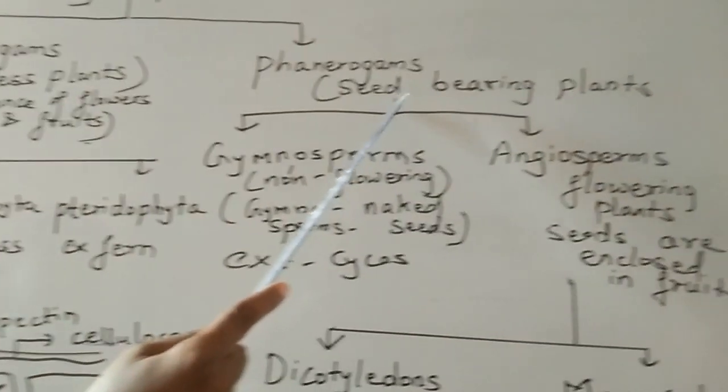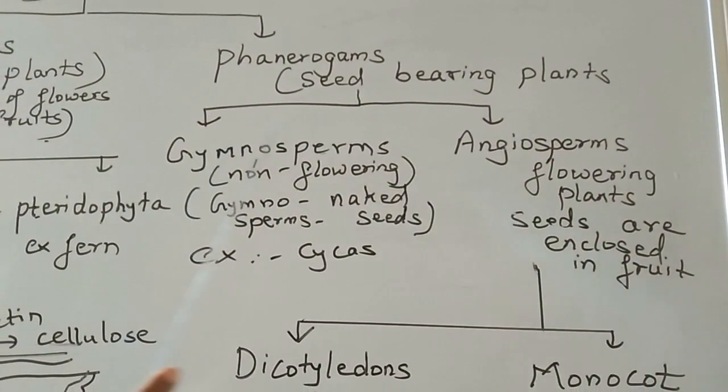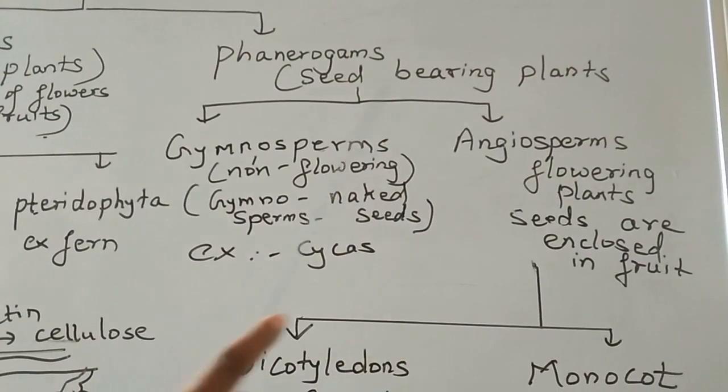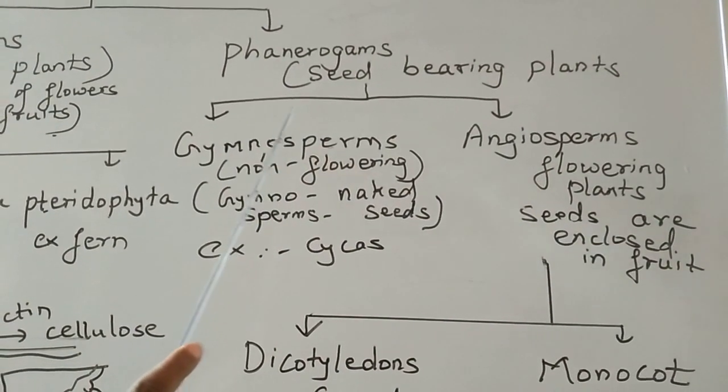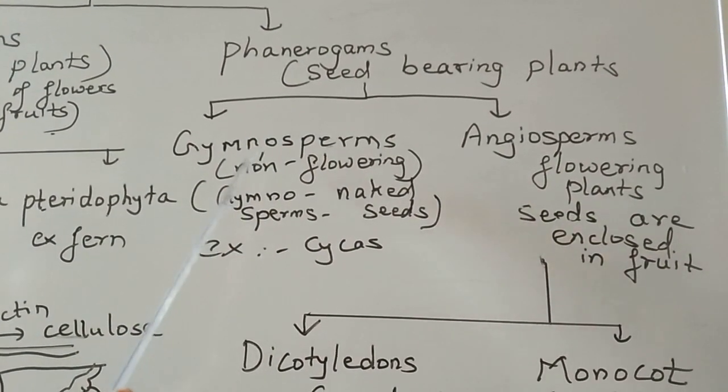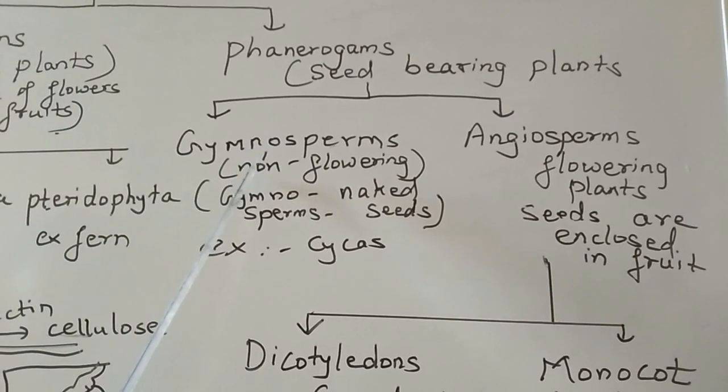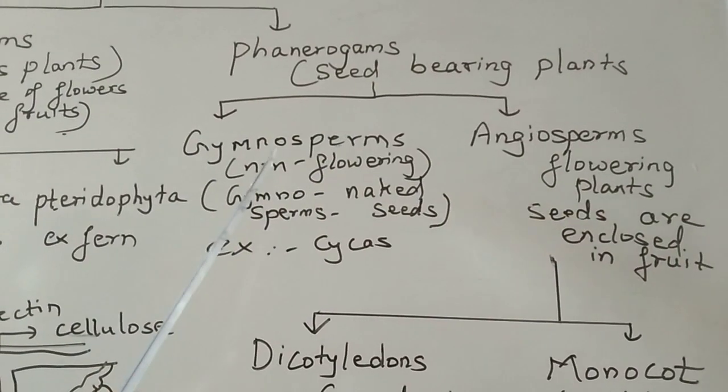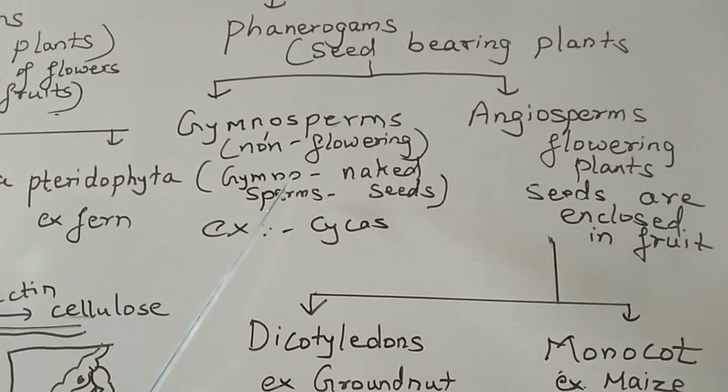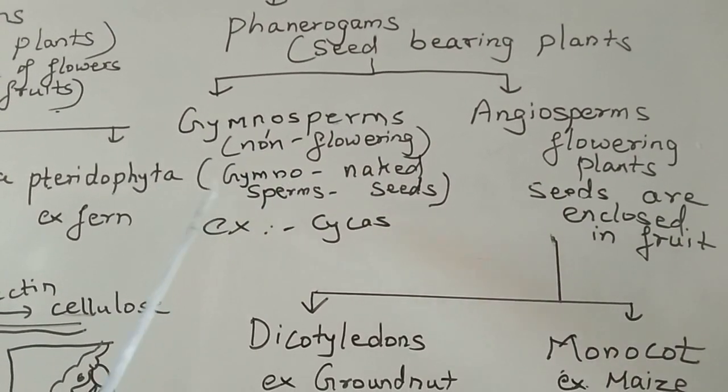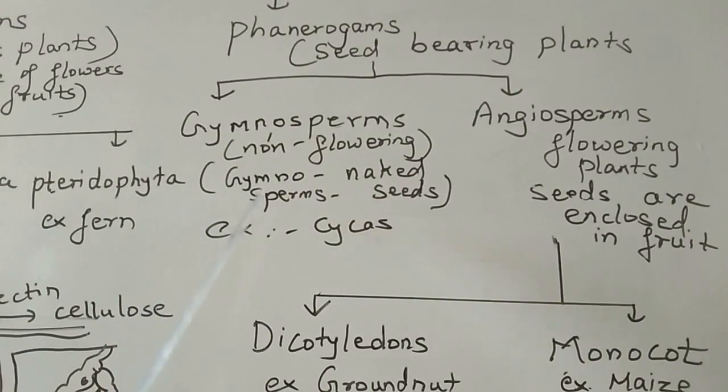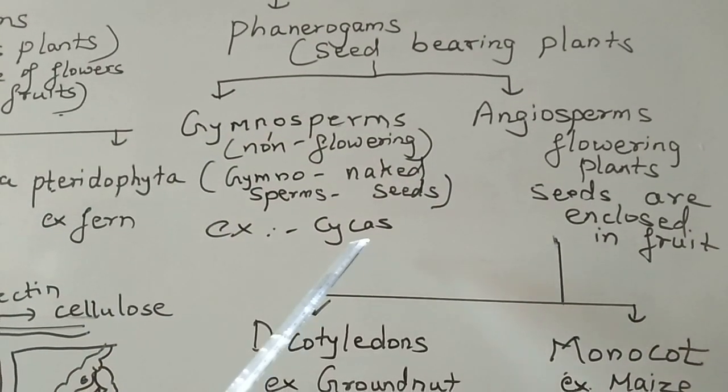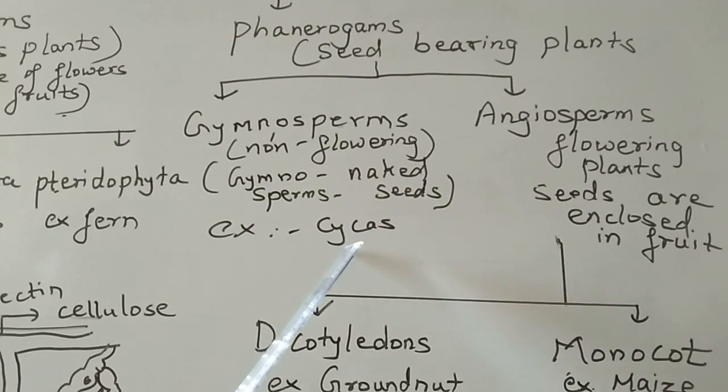The phanerogams are divided into gymnosperms and angiosperms. Gymnosperms are non-flowering plants. The meaning of gymnosperms means naked seeds. Those plants in which seeds are not enclosed in a fruit will be called as gymnosperms. For example, we are going to study about cycas.